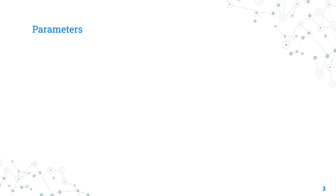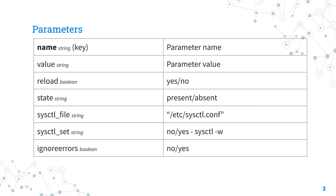Let me summarize the parameters of the sysctl module. The only required parameter is 'name', where you specify the parameter name to access or edit. The parameter 'value' sets the value of the sysctl parameter.